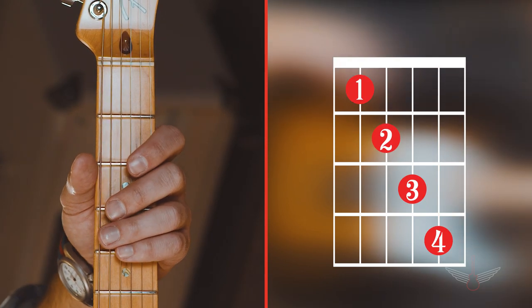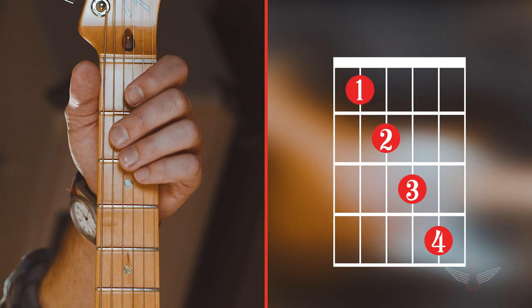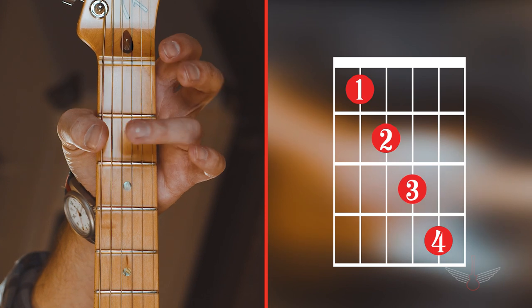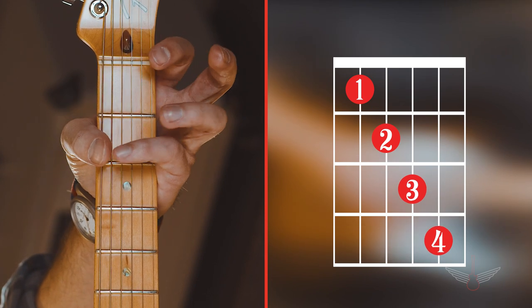These circles represent the fingers. First, or pointer finger. Second, or middle finger. Third, or ring finger. And fourth, or pinky finger.